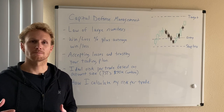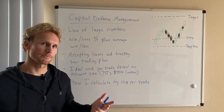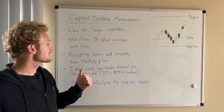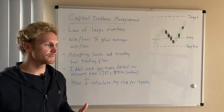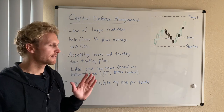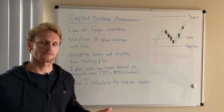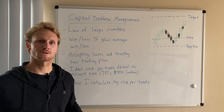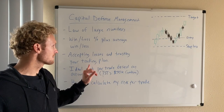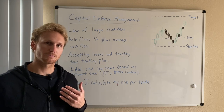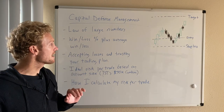To go over what I'm going to be talking about, there are some bullet points on my whiteboard. Capital defense management consists of a few things. The first thing I'll talk about is the law of large numbers, which is pretty much how casinos make money over the long term. Then I'll go into different scenarios for win-loss percentage, average loss, and average win, which will describe different trading styles like a scalper or a swing trader.